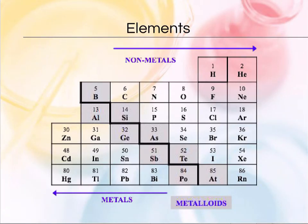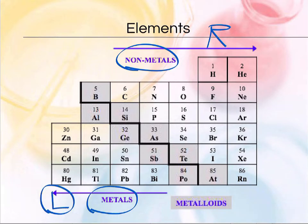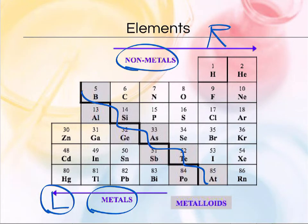Now we can further classify different types of elements. Using our periodic table, you'll notice on the right side are the non-metals, like fluorine, chlorine, oxygen, and nitrogen. On the left side you'll find the metals, like zinc, copper, iron, and so on. And then the metalloids lie along this staircase where they have some properties of metals and some properties of non-metals. So we call them metalloids because they're sort of in between, depending on the temperature and the pressure and other conditions.